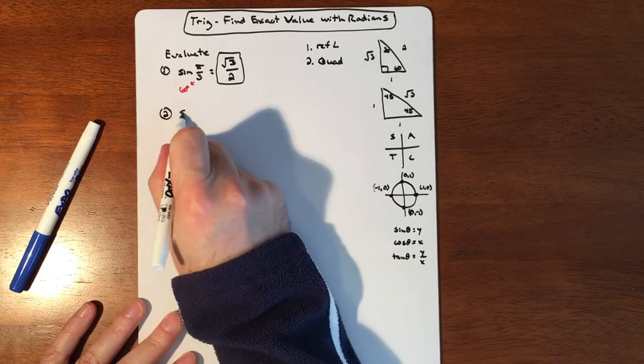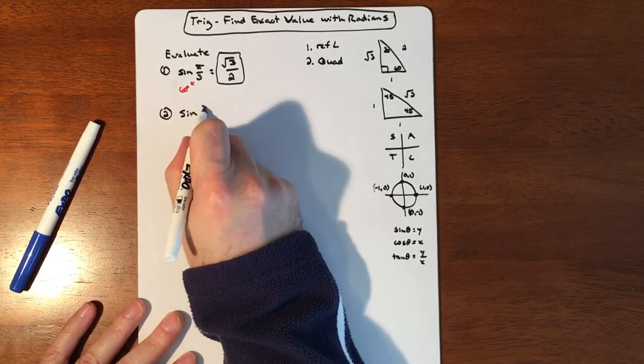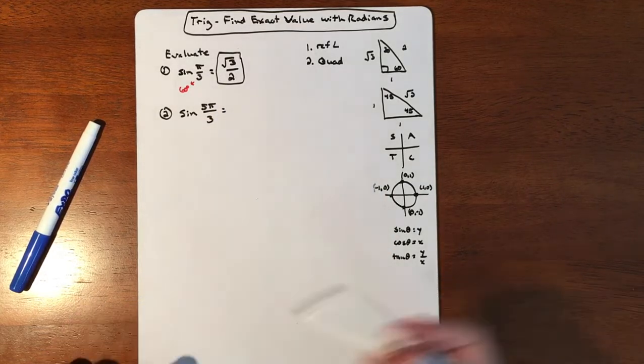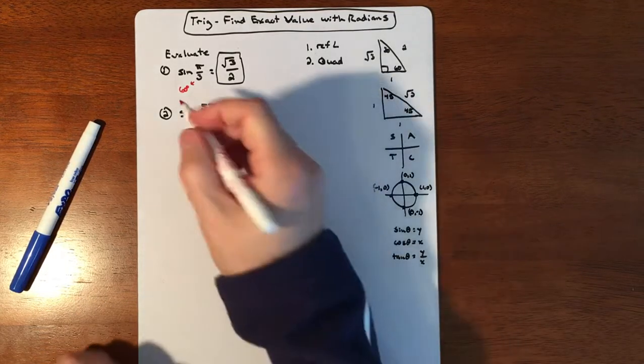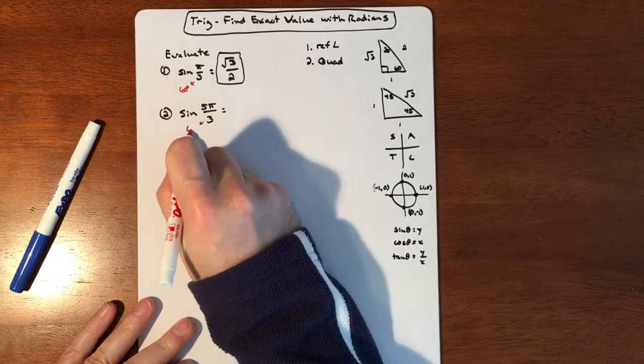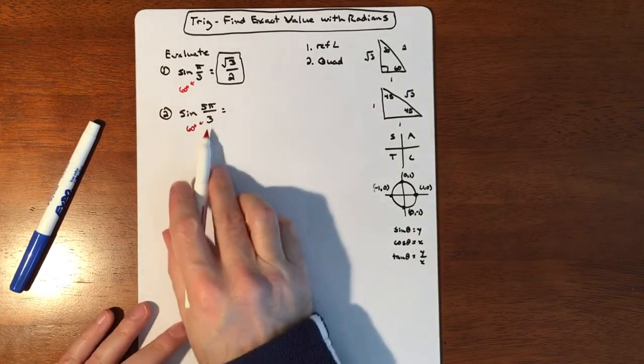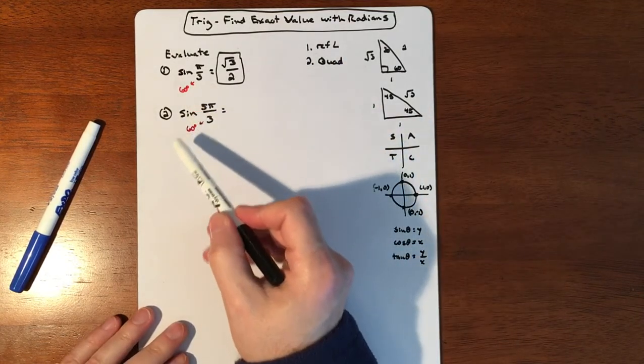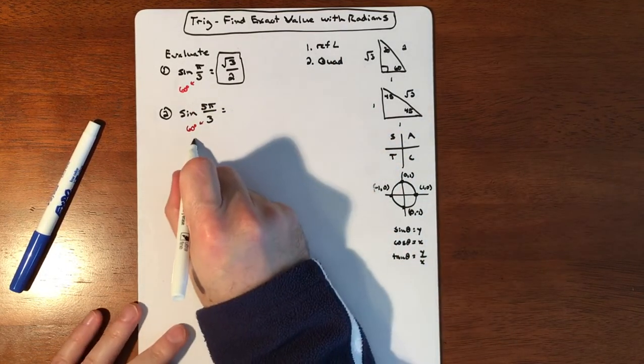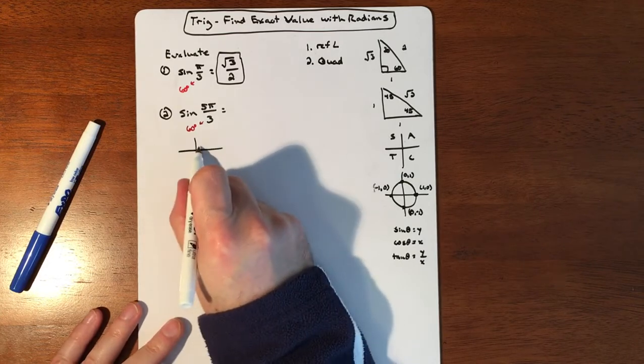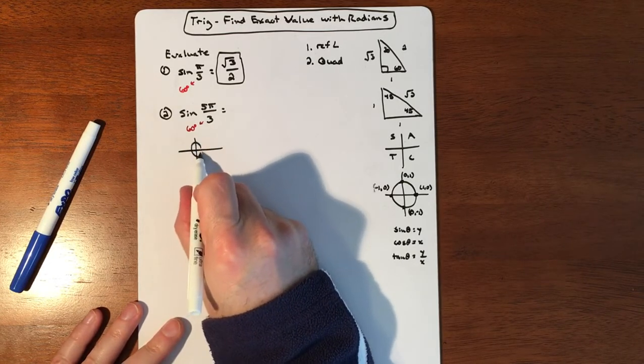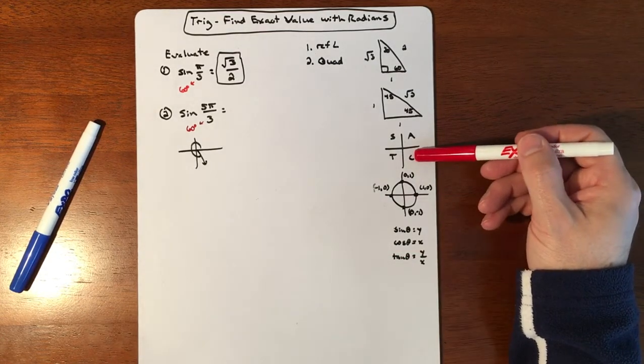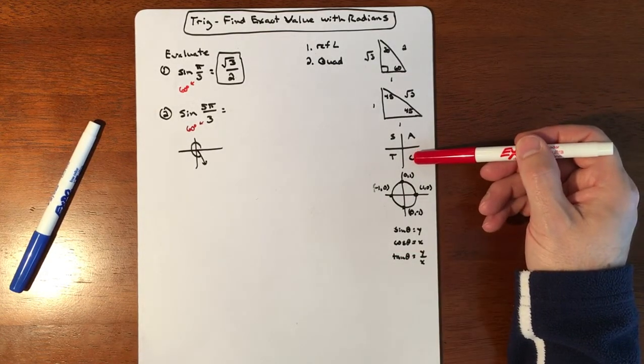So let's do another sine. And we'll do 5 pi over 3. So if you do 5 pi over 3, you're still talking about really sine of 60. So your reference angle is this. So if I draw this, 5 60s means 300 degrees. So if I draw 300 degrees, I would be in the fourth quadrant, which means my answer that I'm about to get is going to be negative.